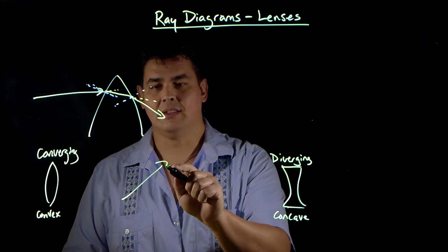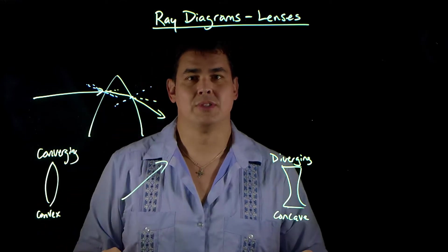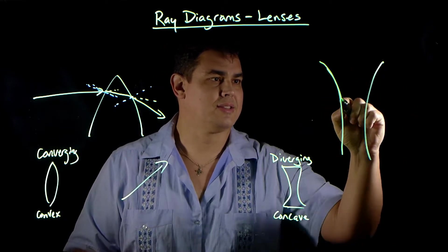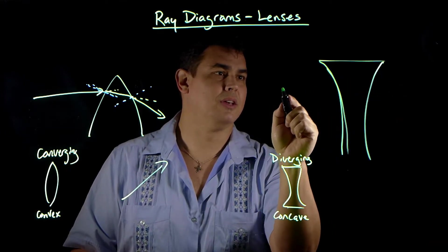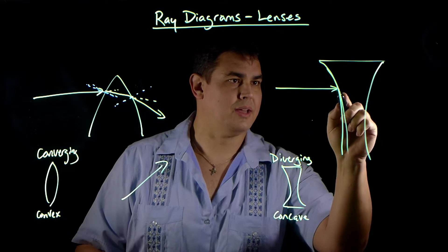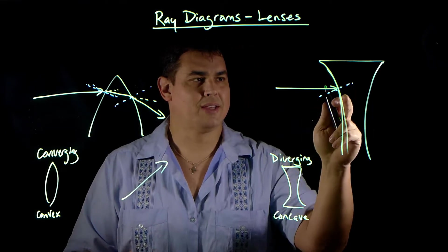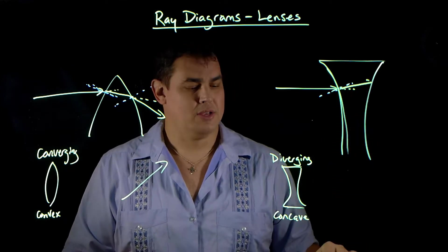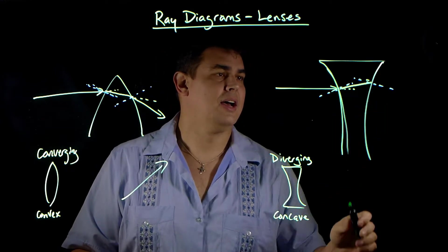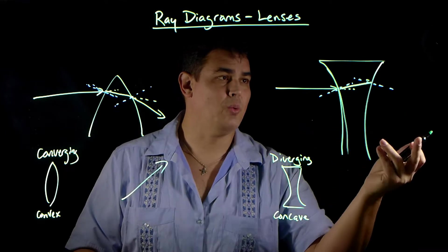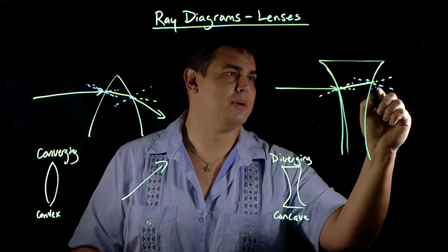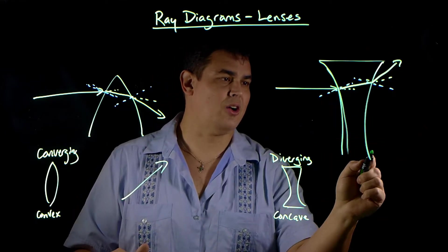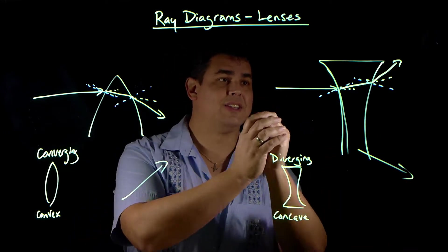If you imagine flipping this, every ray would end up going towards a point in the middle. For a diverging lens, which kind of looks like this, here's a ray coming in — low index to high index bends towards the normal, so it bends up. Then high index to low index bends away from the normal, so it pushes the ray away. All the rays that come through a diverging lens are going to diverge away from a point.